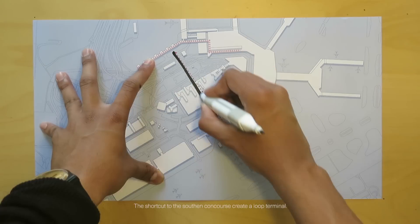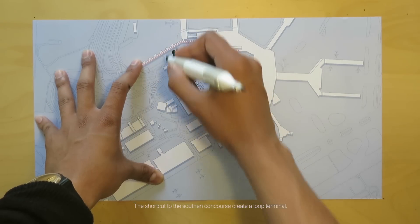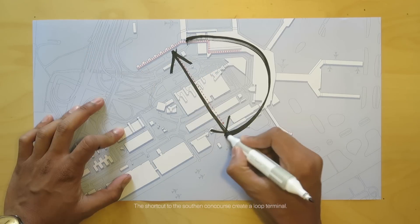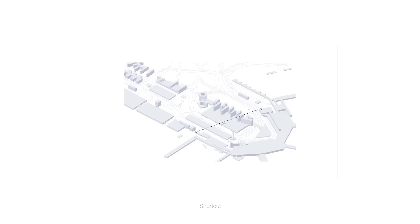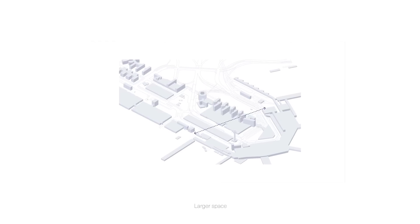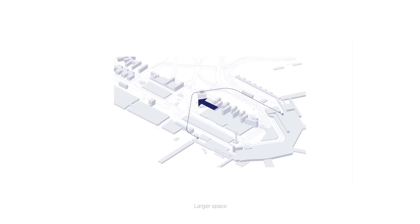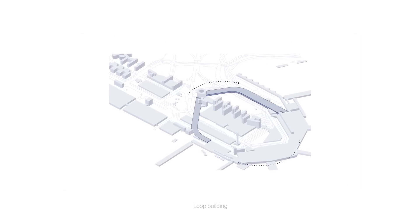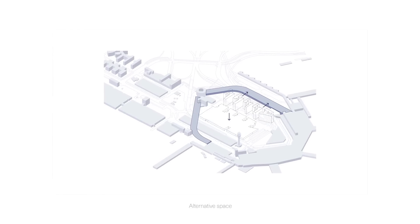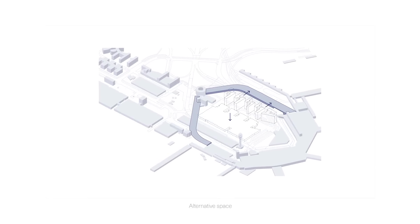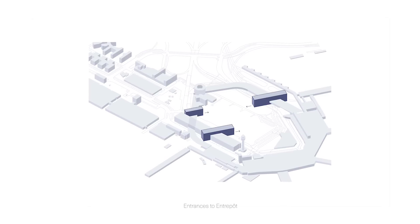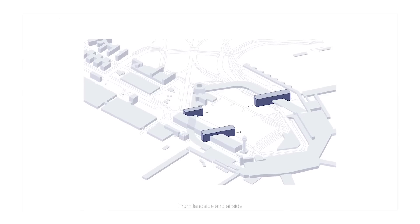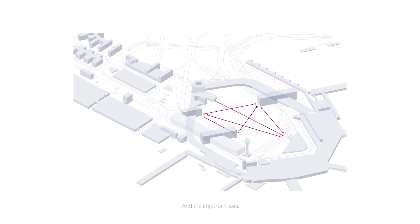This is the accessing site with a single border system and the Anthropo zone as a dedicated third space. Transport nodes create an entrance from the north, also located in the area of wide-body aircraft gates. The shortcut to the southern concourse creates a loop terminal. Key elements include: shortcut, larger space, loop building, alternative space, hybrid building, entrances to the Anthropo from the land side and the air side, and the important axis.